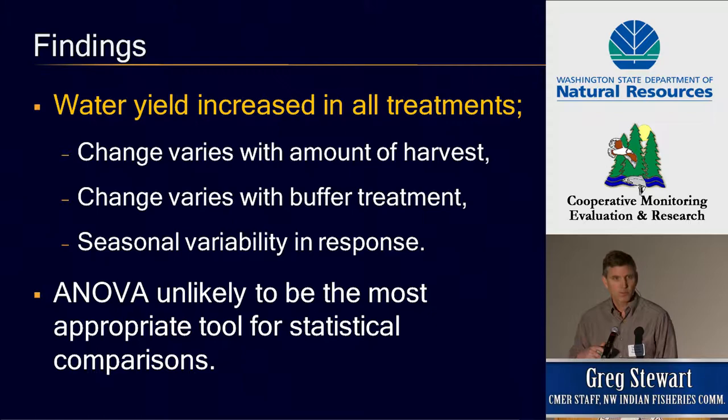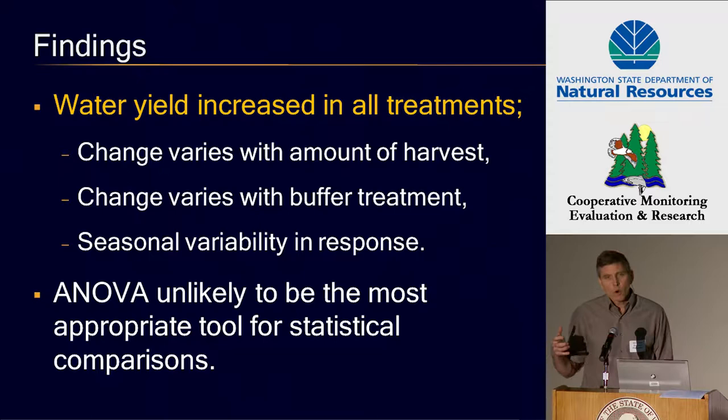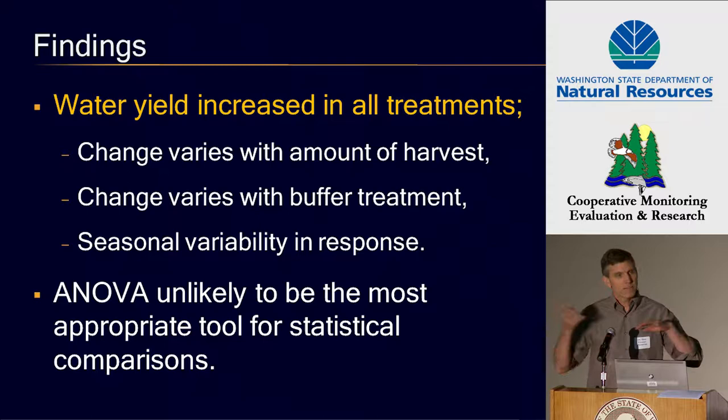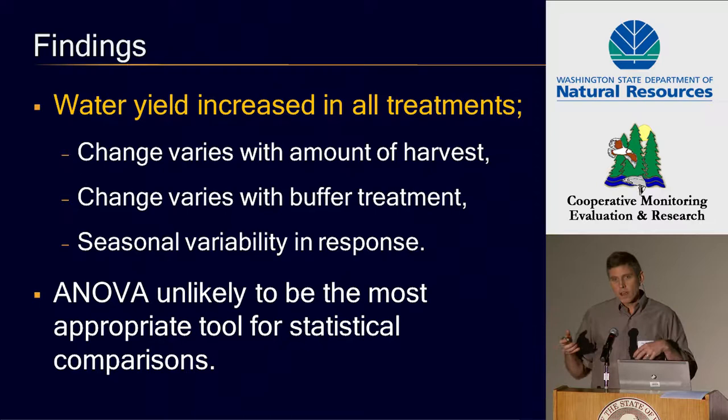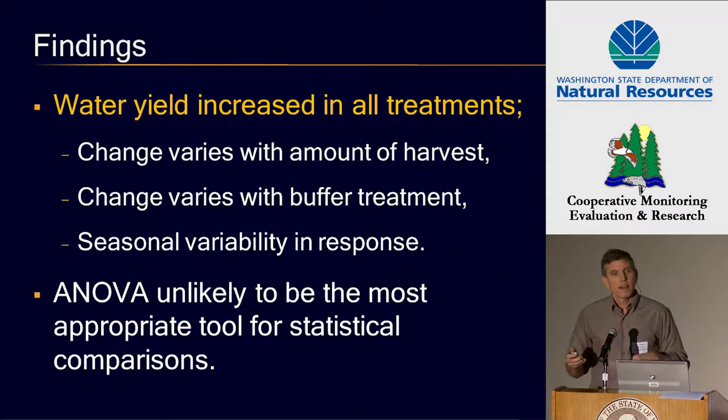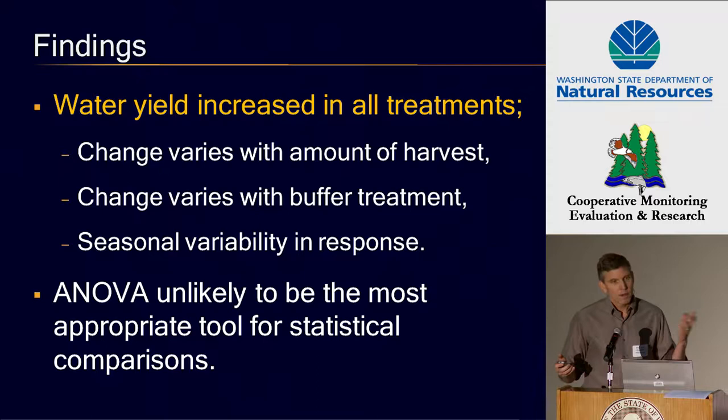I actually have two different messages in this talk. The first one is for the policy folks here: what we saw was what we expected. Total yield on a per-area basis increased following harvest. So if you cut down and remove the vegetation, you decrease evapotranspiration and more water runs off. The more harvest — the bigger percentage of the basin that you harvest — the more water runs off.